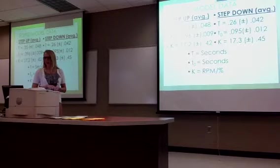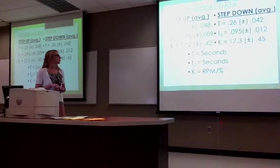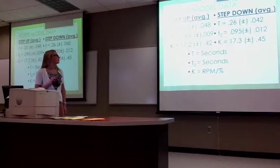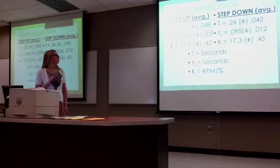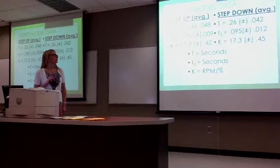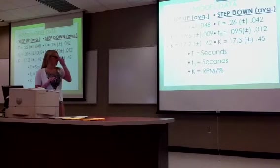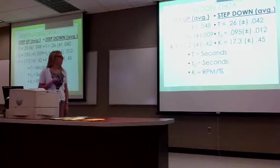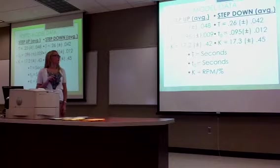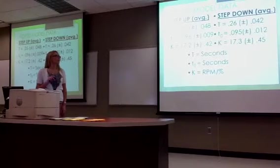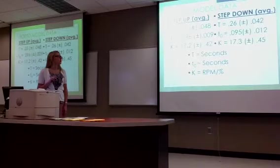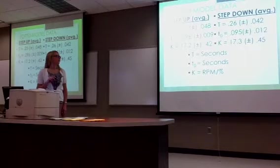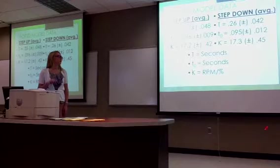Here is the actual data with the uncertainties calculated for each of our members. For the step up: tau is 0.25 plus or minus 0.048 seconds, dead time is 0.096 plus or minus 0.009 seconds, and the gain is 17.2 plus or minus 0.42 RPMs per percent. For the step down: tau is 2.6 plus or minus 0.042 seconds, dead time is 0.095 plus or minus 0.012 seconds, and the gain is 17.3 plus or minus 0.45 RPMs per percent.